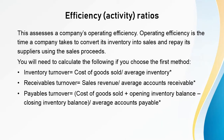Now let's look at efficiency ratios, also called activity ratios. These assess a company's operating efficiency — the time a company takes to convert its inventory into sales and repay its suppliers using the sales proceeds. This entire cycle is called the cash conversion cycle. Operating efficiency is important because companies with shorter cash conversion cycles can complete more cycles in a year, resulting in higher revenues, receiving revenue sooner, and avoiding borrowing money for operating expenses.